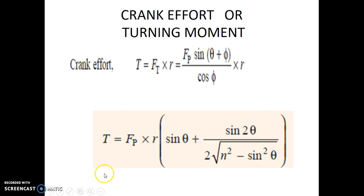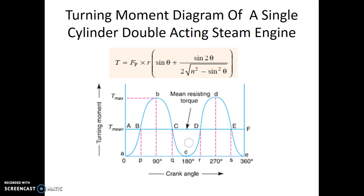We had modified that equation to this form where T is the turning moment acting on the crank and the crankshaft. In this equation, we find that the torque value is dependent upon one variable, theta, which is varying with the crank rotation. Theta is the angle made by the crank at any instant with the line of stroke of the piston. Therefore, we find that the torque is a variable dependent upon theta.